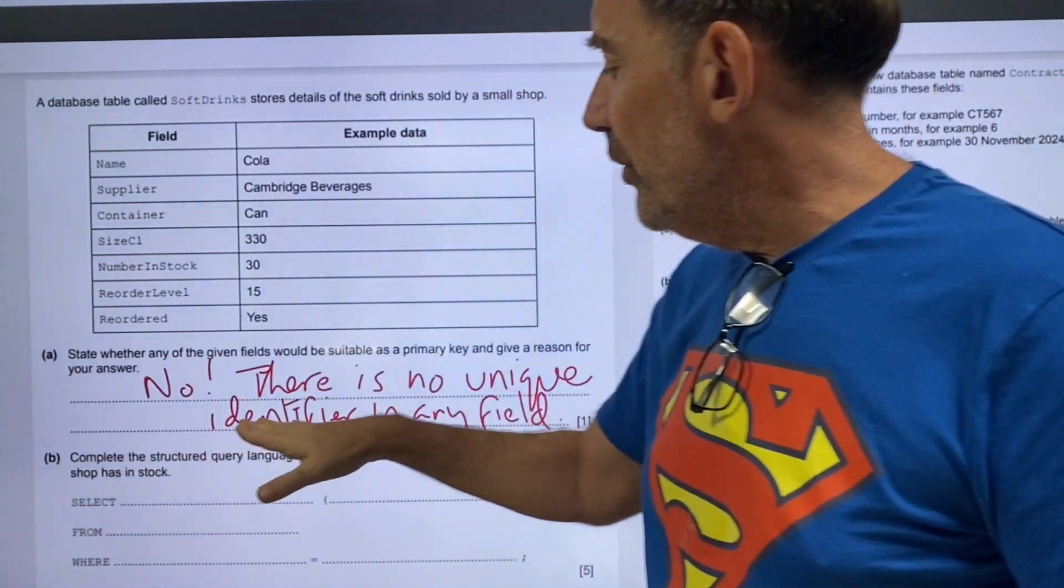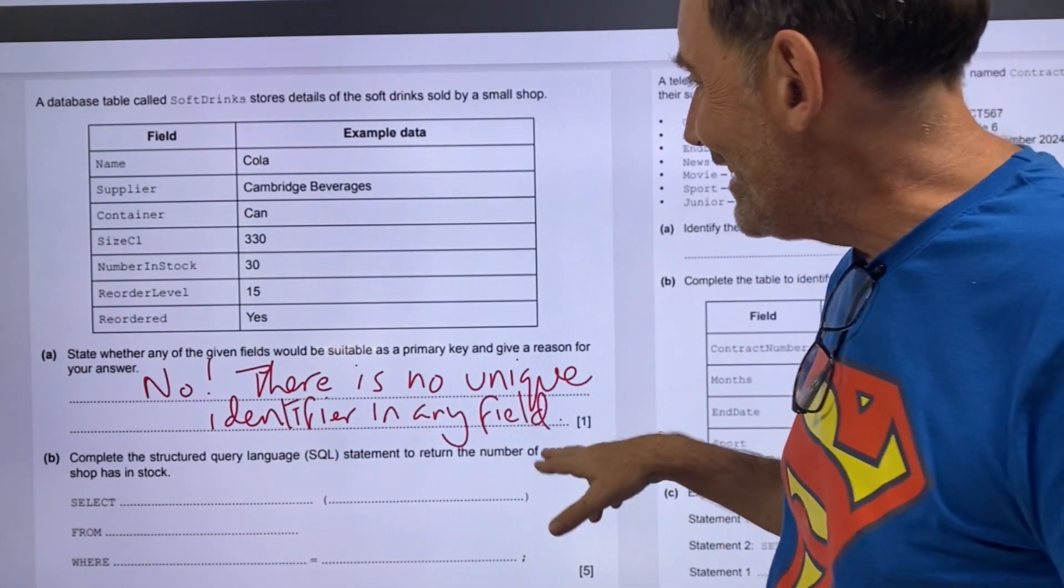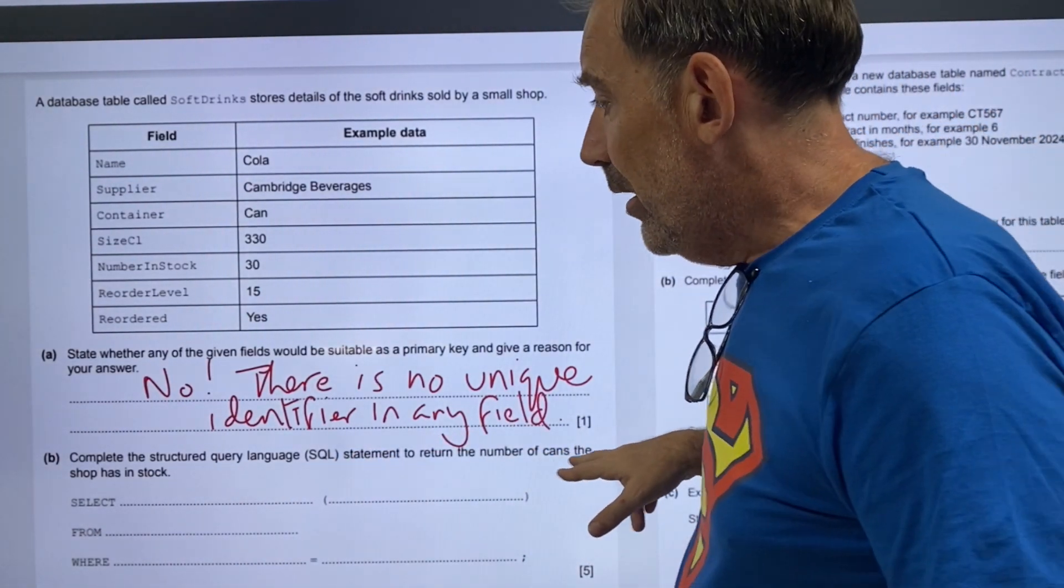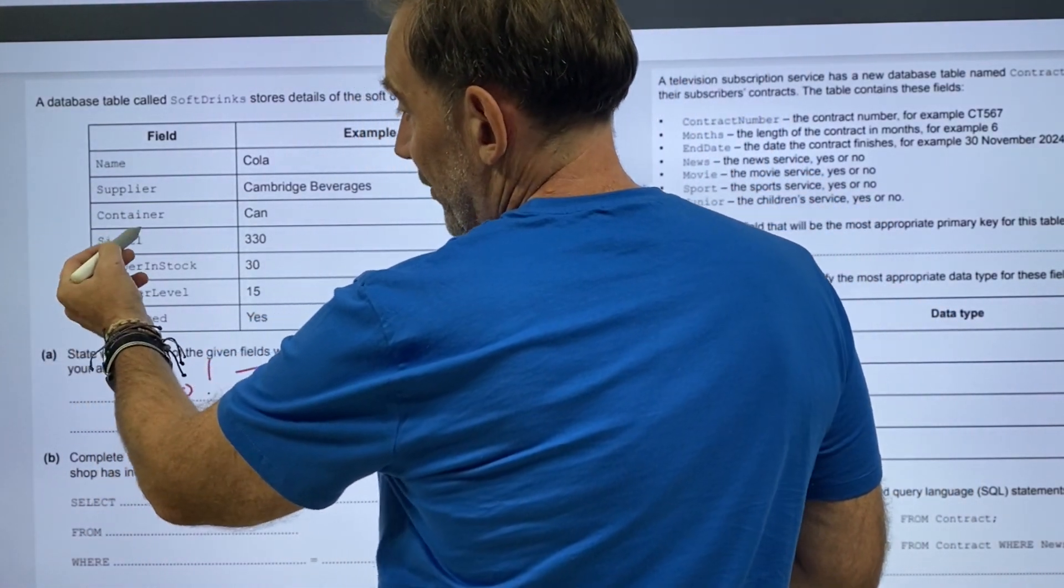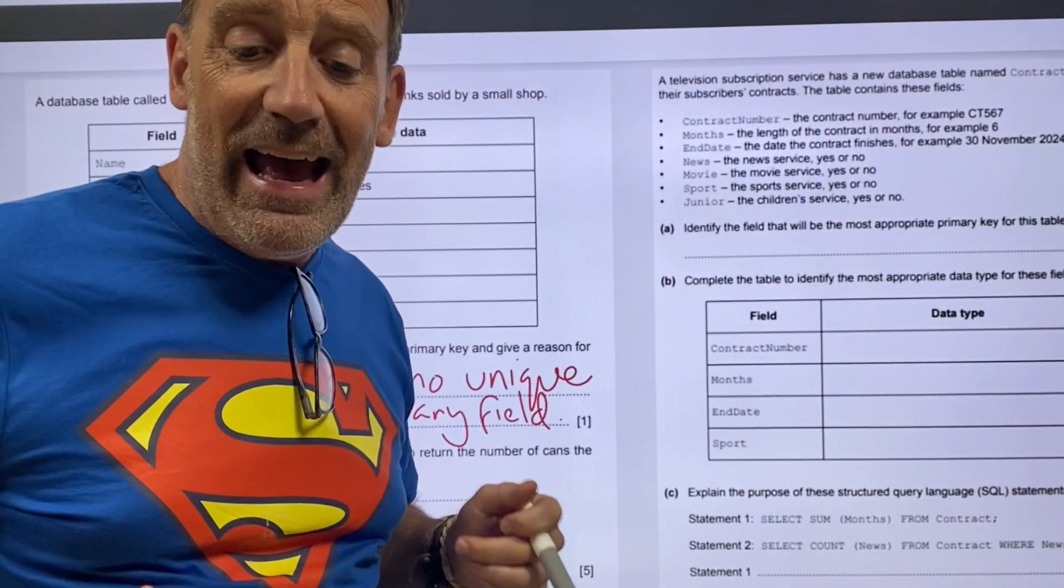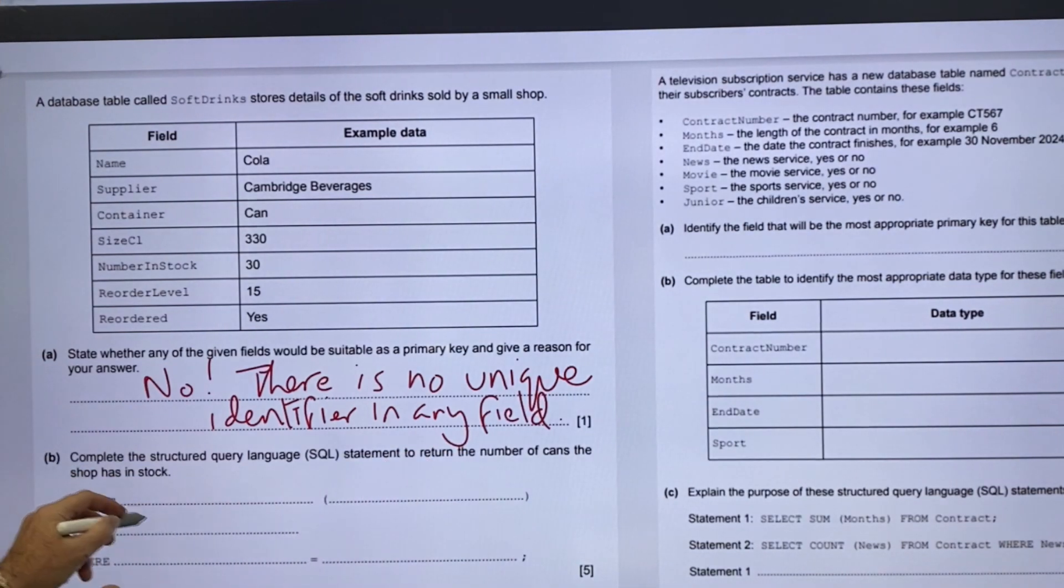Part B, complete the structured query language SQL statement to return the number of cans the shop has in stock. Where container equals can. Assuming that container equals can, we're going to select a number, return a number. So I'm going to select sum.